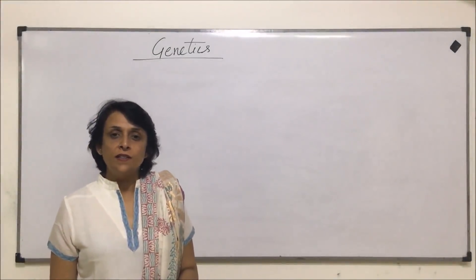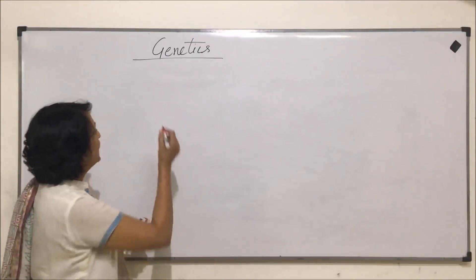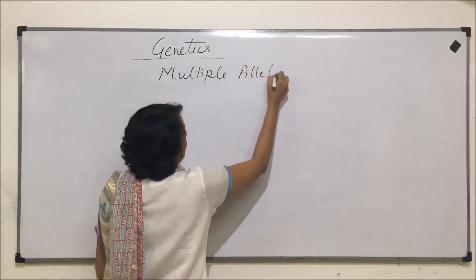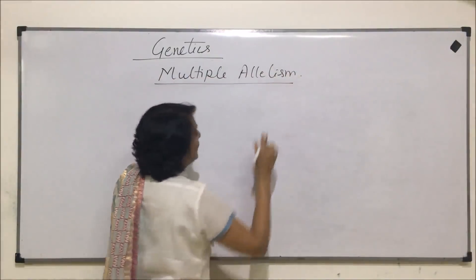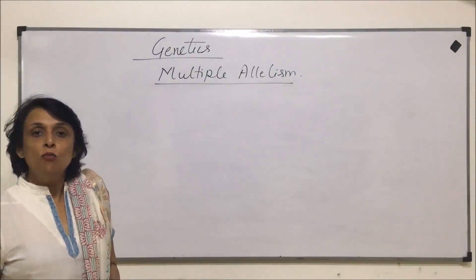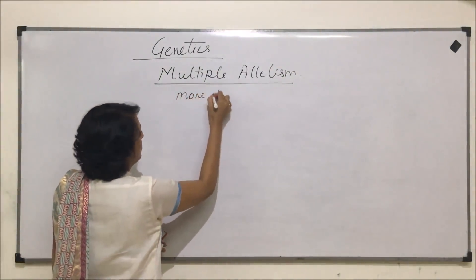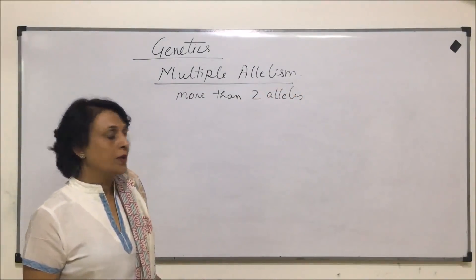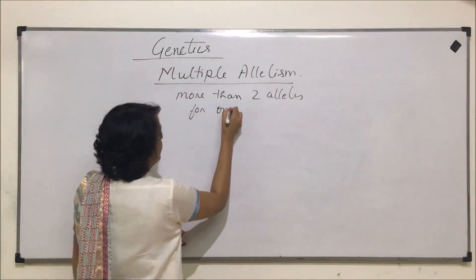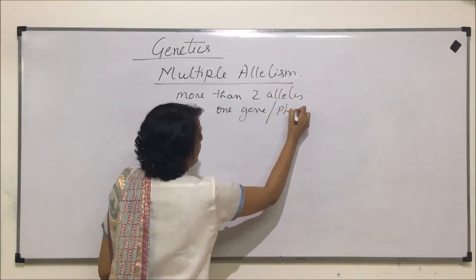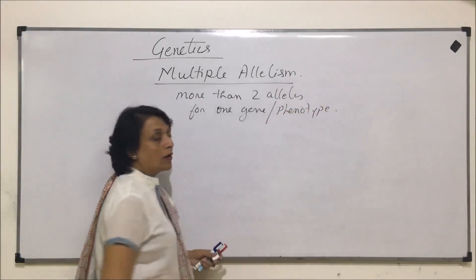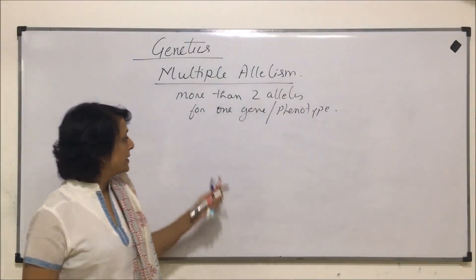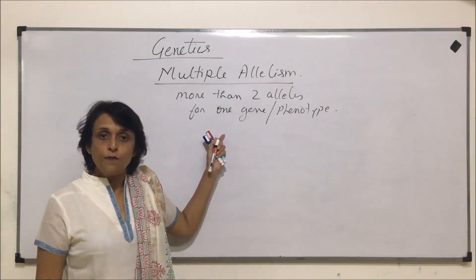In this video, we'll talk about another type of inheritance: multiple allelism. Multiple allelism means when there are more than two alleles for a particular gene or for a particular phenotype. Up till now, we talked about two alleles for a particular gene — one dominant, one recessive in most cases. Here, we are talking of more than two alleles of one gene.